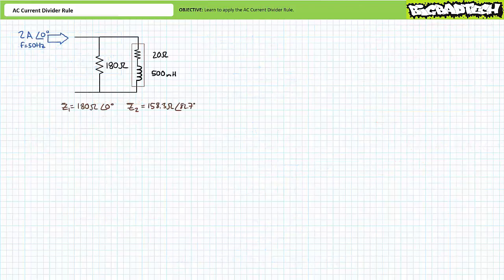Let's try another illustrated example of the AC current divider rule, this time featuring a parallel combination of two different elements. In an effort to make this lecture compact, I've already taken the liberty of calculating the impedance for each element. Z1 is a resistor with an impedance of 180 ohms at an angle of zero degrees.